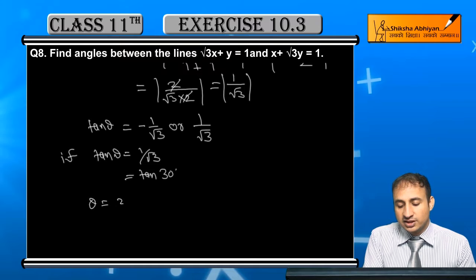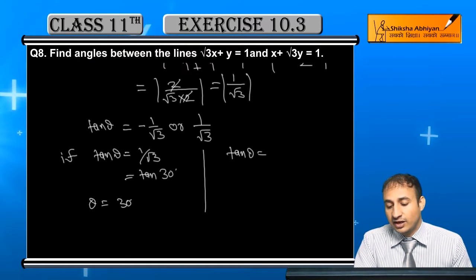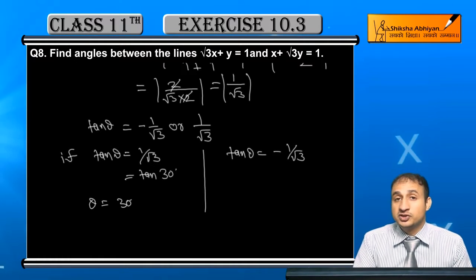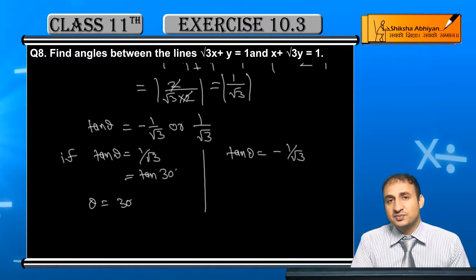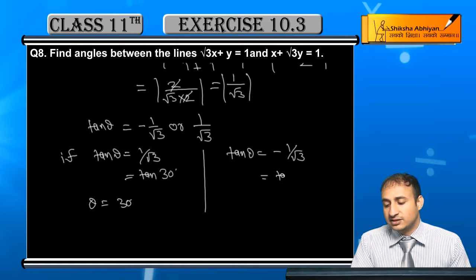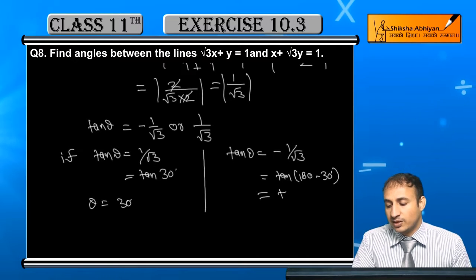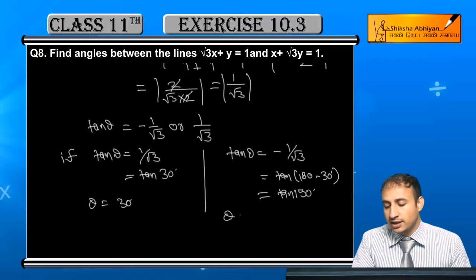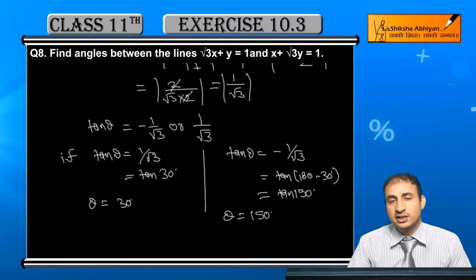This means theta is 30 degrees. If we take the tan theta value as minus 1 by root 3, this corresponds to the second quadrant where the value is negative. In that case, it can be written as tan of 180 minus 30 degrees, which gives tan 150 degrees, so theta equals 150 degrees. Therefore, the two angles between the lines are 30 degrees and 150 degrees.